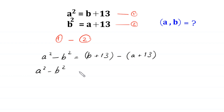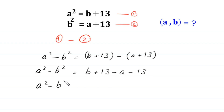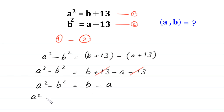So a squared minus b squared equals b plus 13. Removing the brackets, the negative sign changes the signs: positive a becomes negative a, and positive 13 becomes negative 13. The two 13s cancel, leaving a squared minus b squared equals b minus a. Moving negative a and positive b to the left side gives a squared minus b squared plus a minus b equals 0.